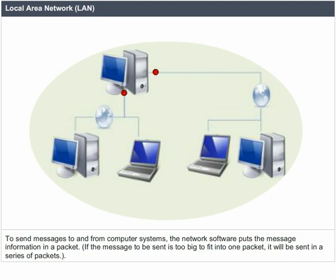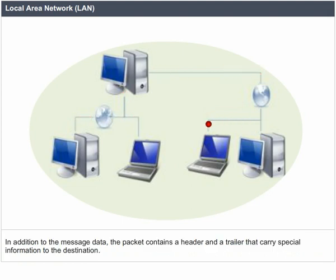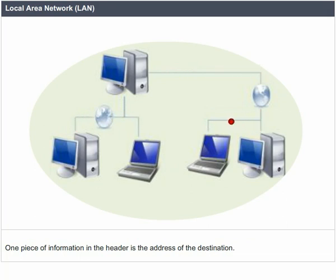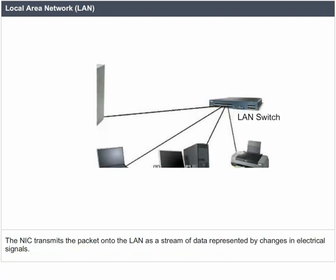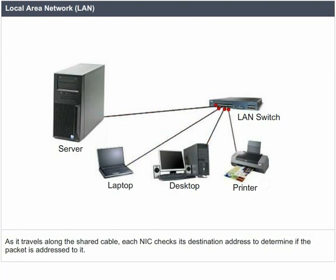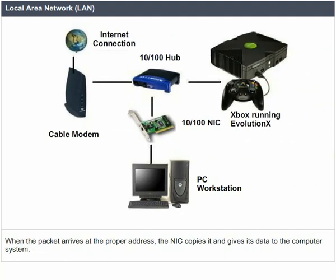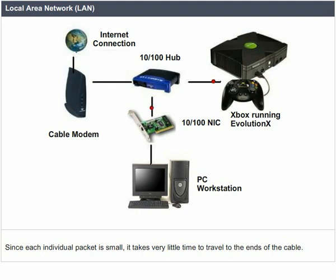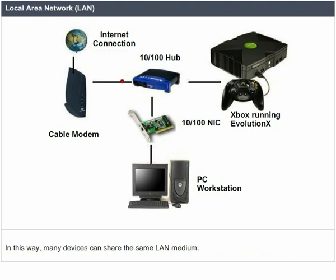If the message to be sent is too big to fit into one packet, it will be sent in a series of packets. In addition to the message data, the packet contains a header and a trailer that carry special information to the destination. The NIC transmits the packet onto the LAN as a stream of data represented by changes in electrical signals. As it travels along the shared cable, each NIC checks the destination address to determine if the packet is addressed to it. When the packet arrives at the proper address, the NIC copies it and gives its data to the computer. Since each individual packet is small, many devices can share the same LAN medium.